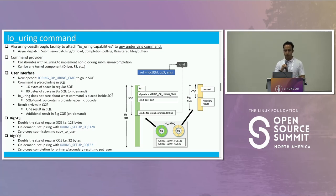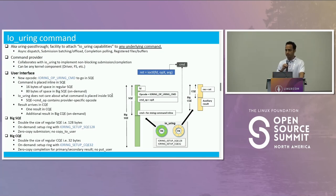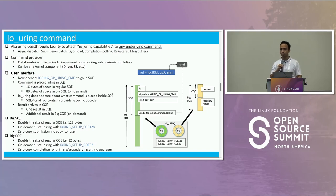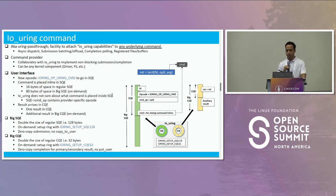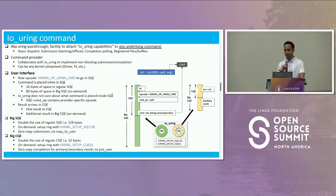Uring Command is also known as Uring pass-through. This is a generic facility to attach any io_uring capability to any underlying command. Any io_uring capability is important here — while I'm talking a lot about asynchronous things, that's not the only capability io_uring has. Other capabilities include: submission batching, submission offload, completion pooling, registered files, registered buffers — all of that is possible.